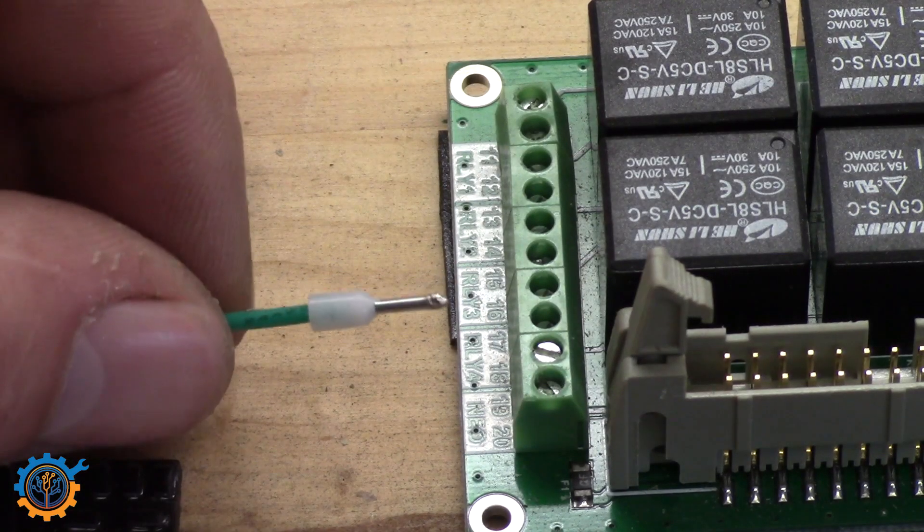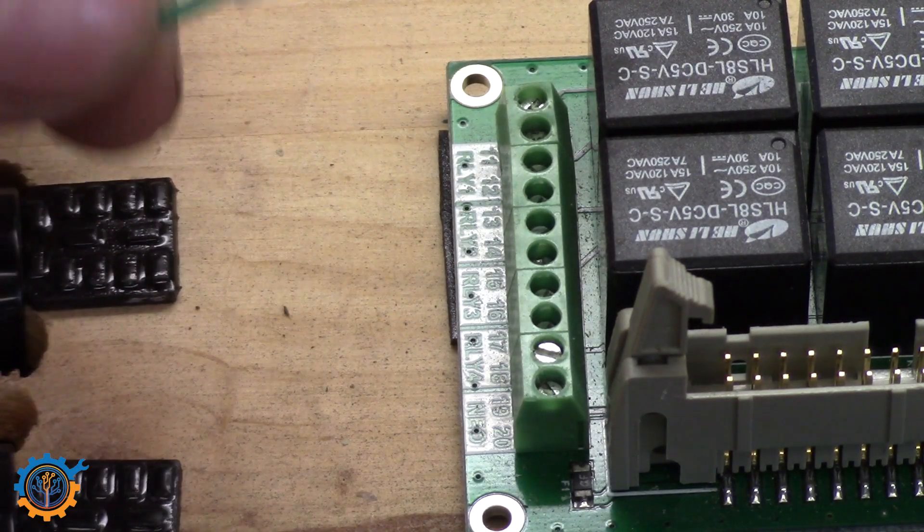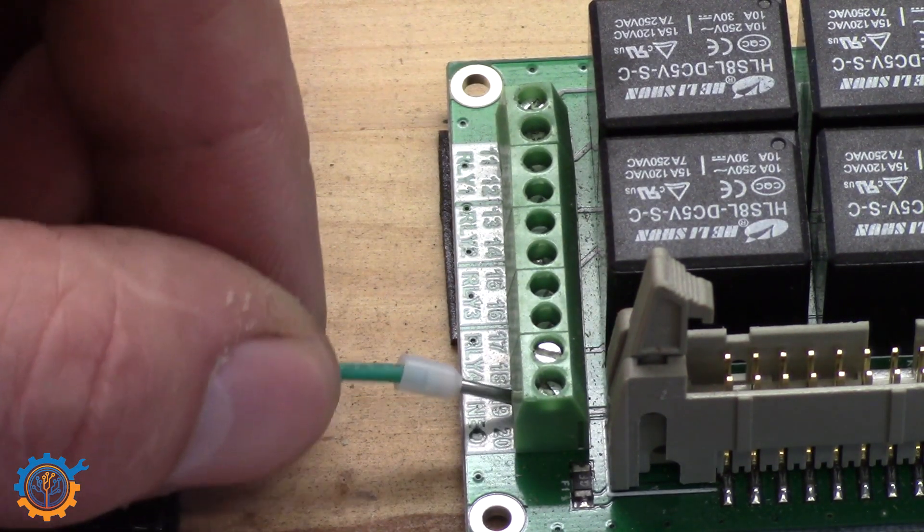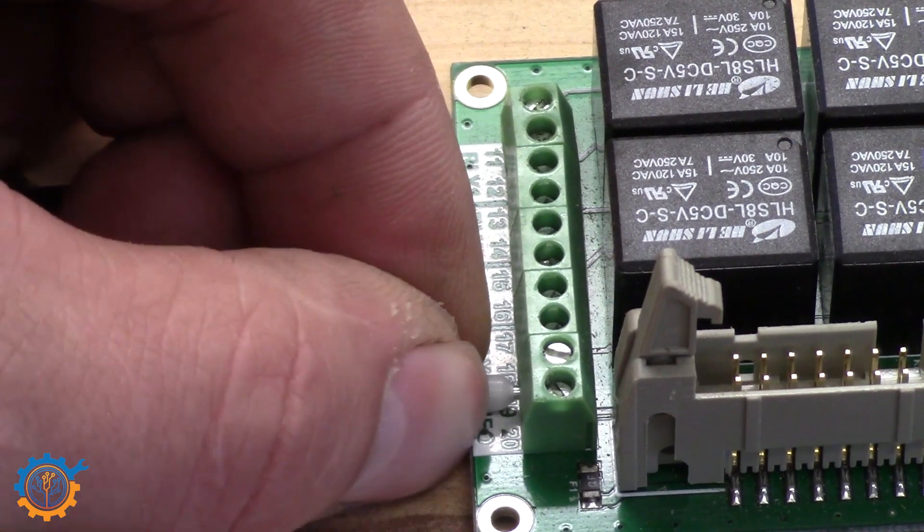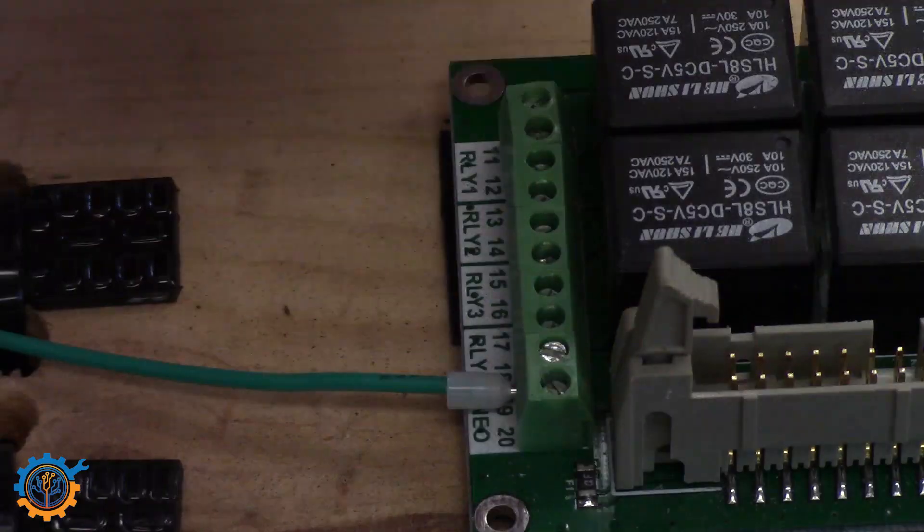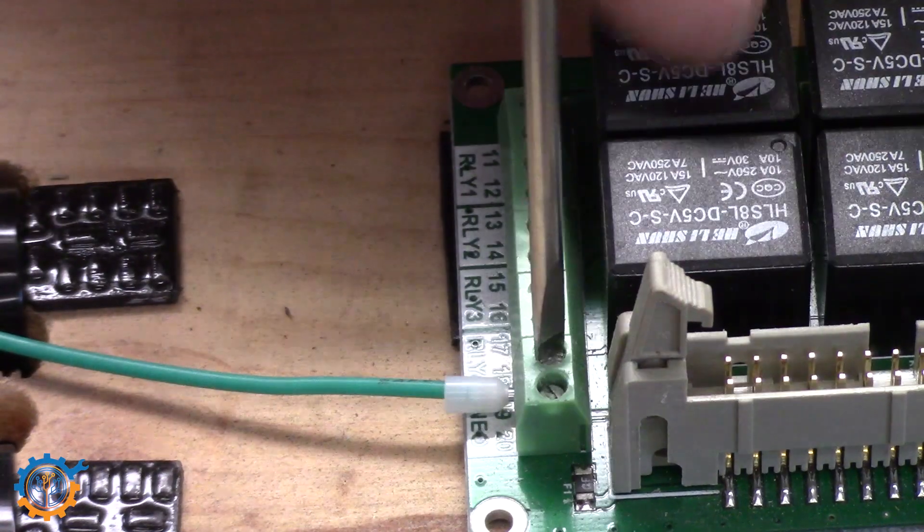So basically, we have our freshly added end. And we just push that one inside. And we can tighten the screw a little bit if we want.